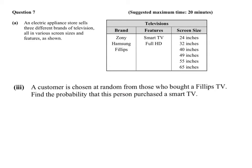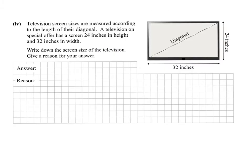The third part: a customer is chosen at random from those who bought the Phillips — so no Zonies, no Hamsons, just the Phillips people. What is the chance that they chose a smart TV? They're not interested in the screen sizes, just whether it was smart. There are only 2 choices, so the probability is 1 out of 2.